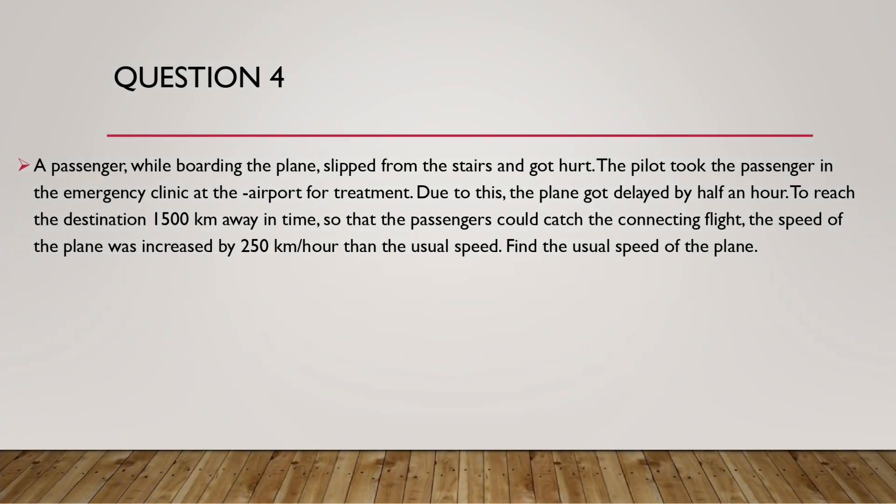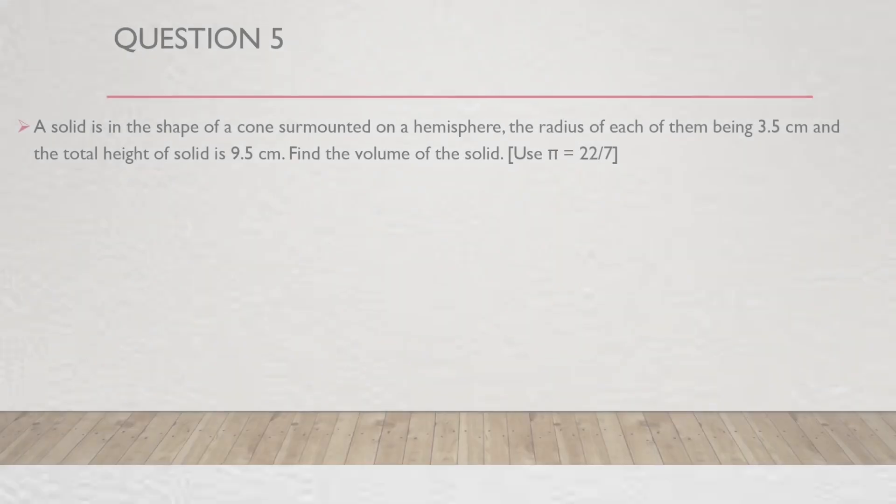Question 4. A passenger while boarding the plane slipped from the stairs and got hurt. The pilot took the passenger to the emergency clinic at the airport for treatment. Due to this, the plane got delayed by half an hour. To reach the destination 1500 km away in time so that the passenger could catch the connecting flight, the speed of the plane was increased by 250 km per hour from the usual speed. Find the usual speed of the plane.